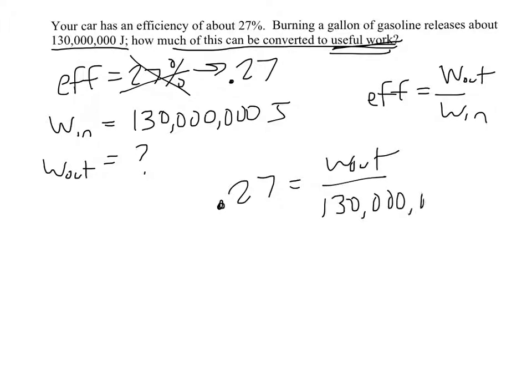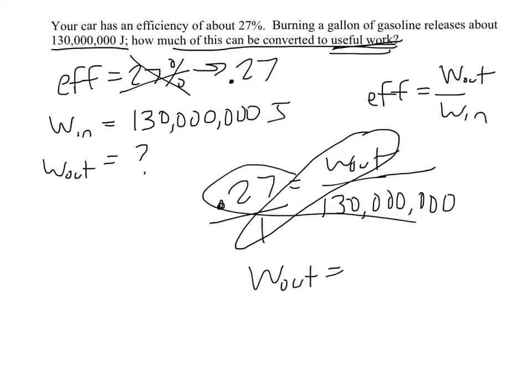So our formula is that the efficiency equals the work out divided by the work in. So if we plug in 0.27 equals work out over 130 million, my advice anytime you have a problem with fractions and you're trying to solve a variable is to cross multiply and divide. So we'll put 0.27 over 1, we'll say cross multiply, so work out times 1 is just work out, and then 0.27 times this, so we're just going to multiply 130 million by 0.27.